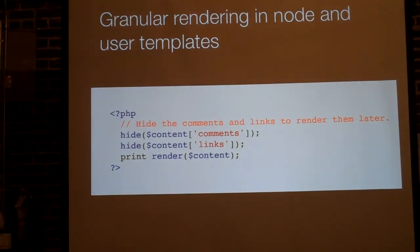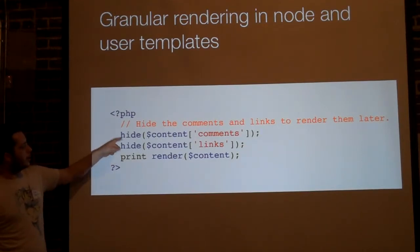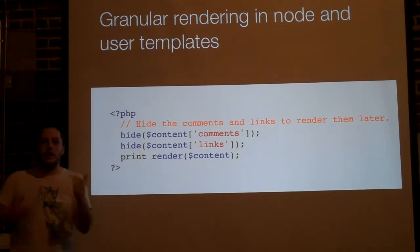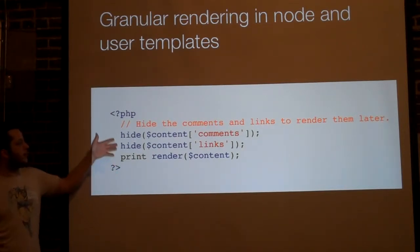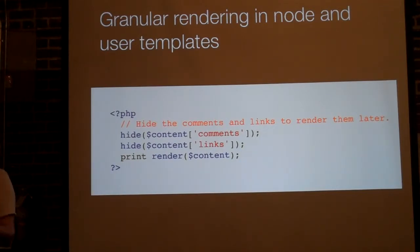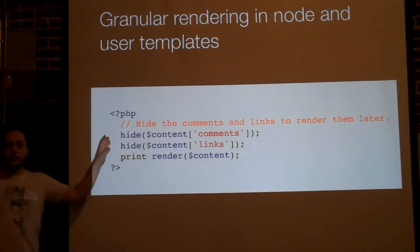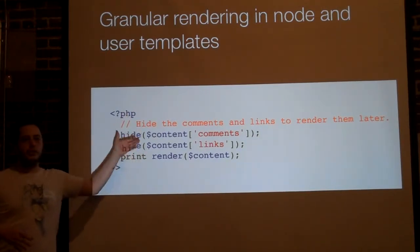More granular rendering of node and user templates. Now we have two new PHP functions: hide and render. We can literally hide little components of a page without having to delete them with code. You could hide something previously and then render it later — for example, if you want to hide it from the general content well and then render that piece, like comments, maybe in a sidebar.